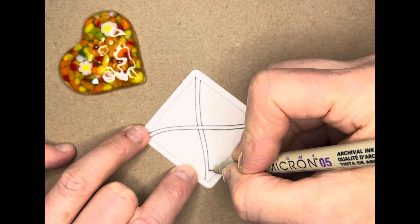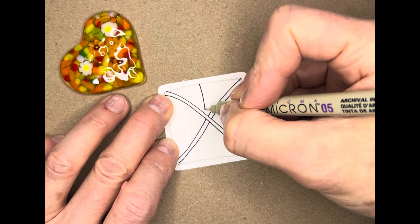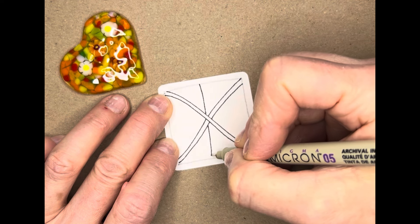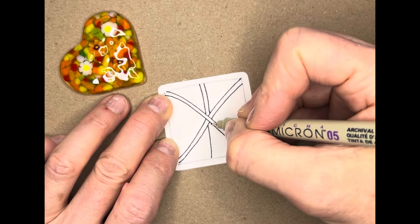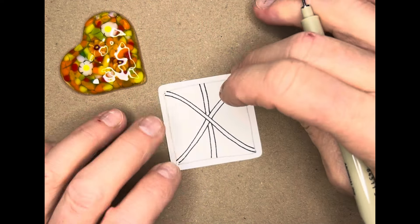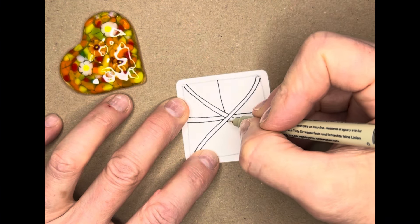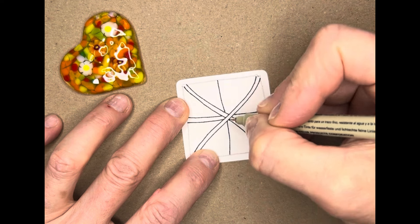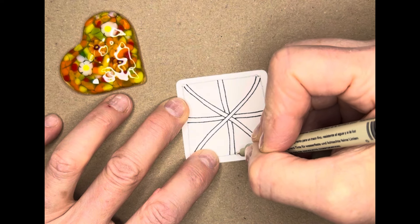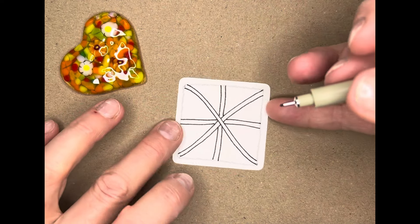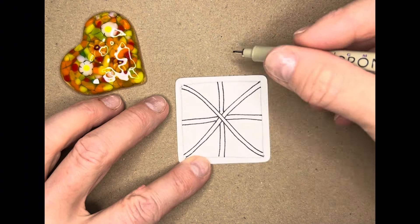So as you start drawing these lines, I want you to really focus upon the process of your pen on the paper. Can you feel the sensation of the pen running over that surface? Maybe you can feel the feedback surface of the paper.